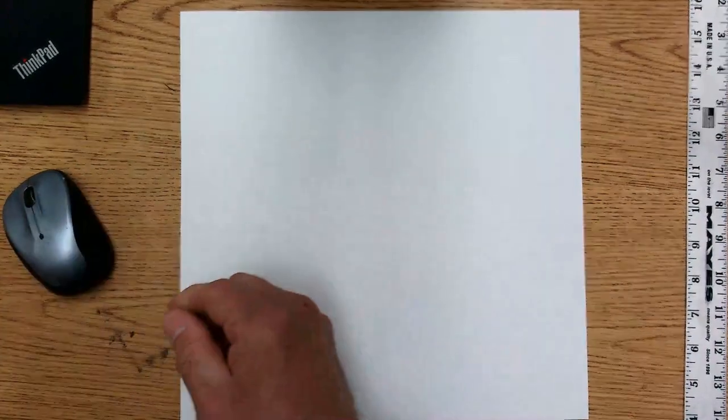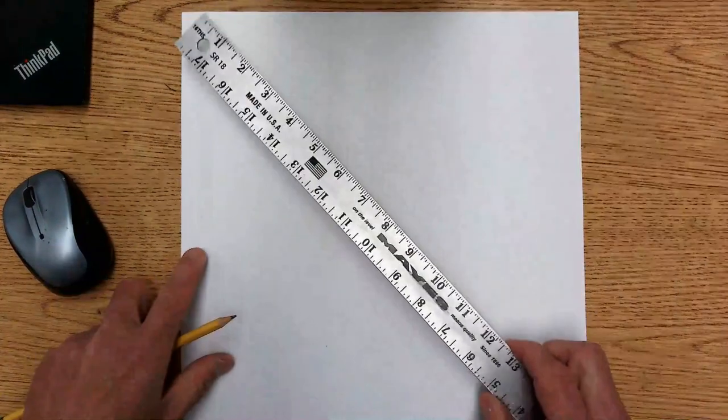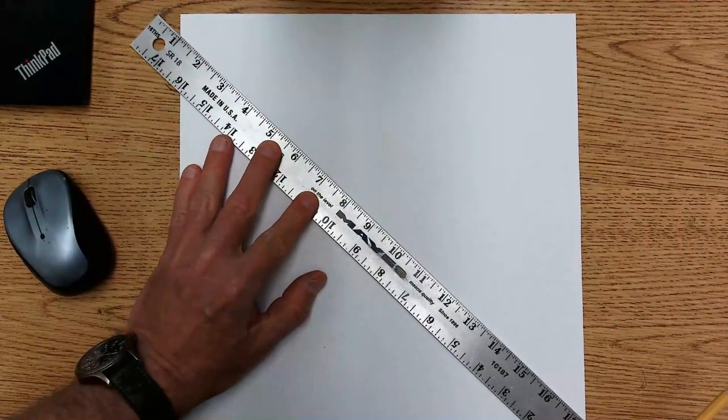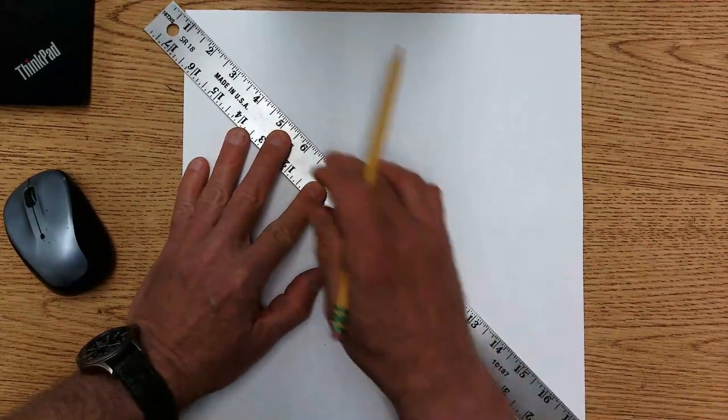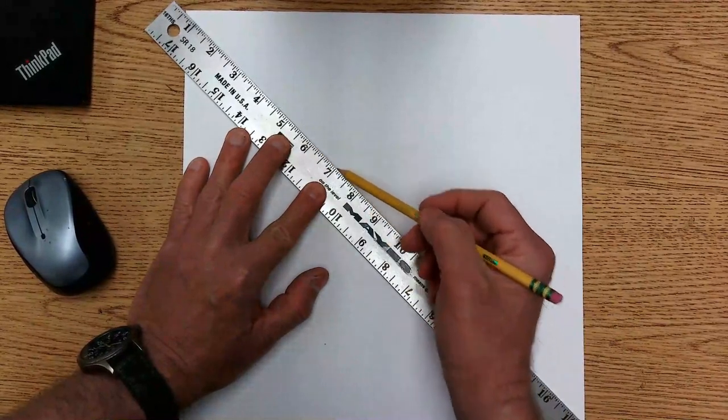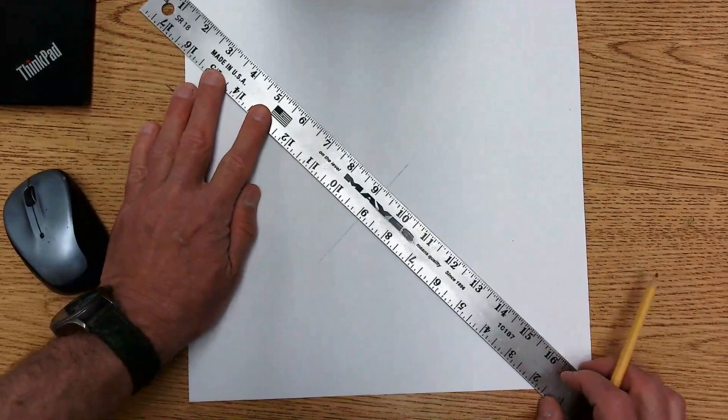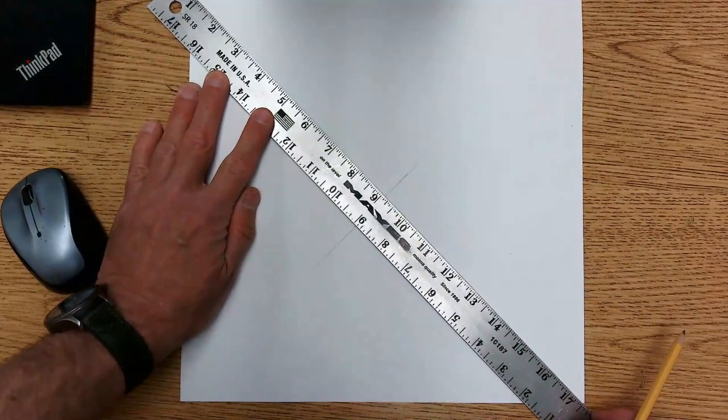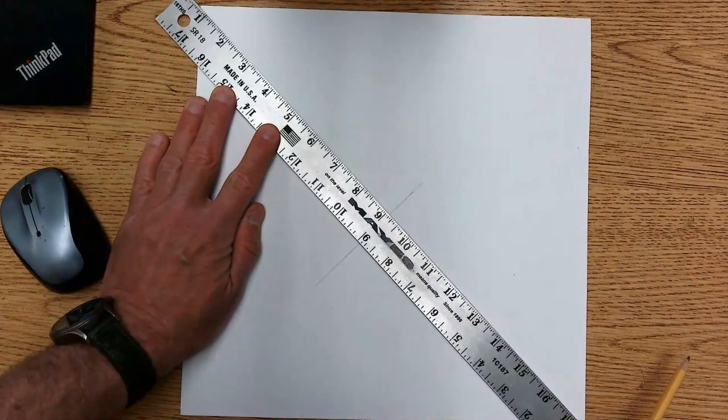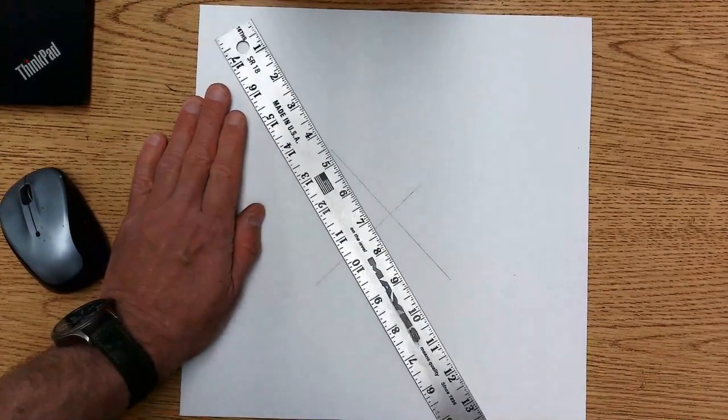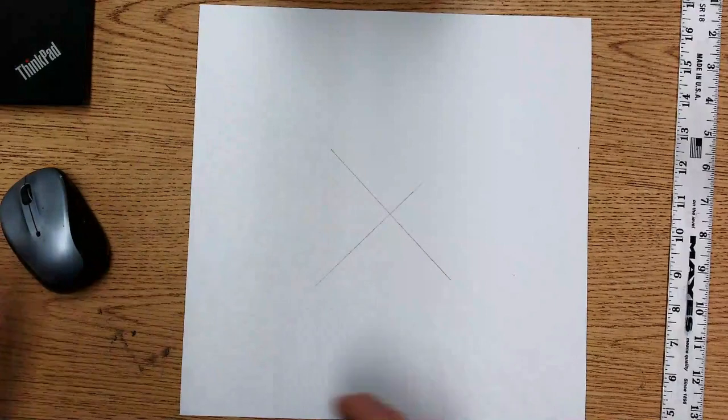Before we draw the circle, we need to find the center of the paper. A super easy way to find the center is to draw an X. So I'm just going to go from corner to corner, and I actually don't even need to go all the way—I can just do a really light X right there. Turn the paper, do another one right here, just make sure the ruler is aligned corner to corner. So I've got an X right there, which gives me the center of the paper.